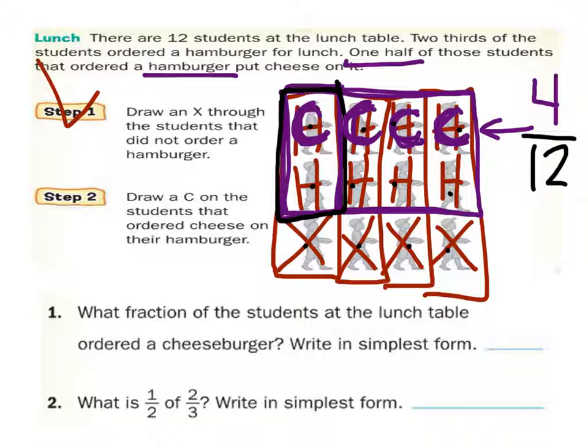And we're going to do this out of how many total students? Twelve. Twelve students. But the problem is here is that these can be divided by the same factor, which in this case is going to be four. So I divide this by four, divide by four, and I end up with one-third.